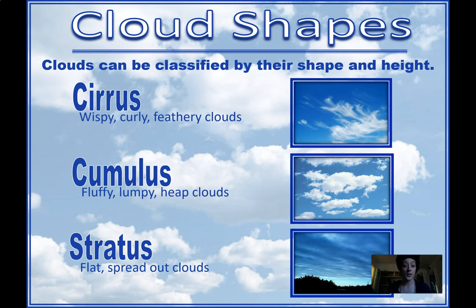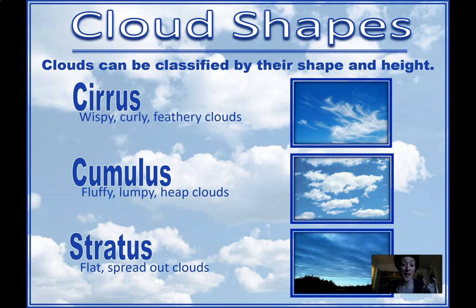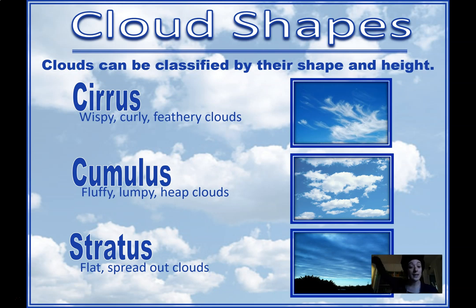Just remember that for the height of the cloud, we use a prefix — it's going to be the beginning of the word that tells you about the height: low is strato, medium is alto, and high is cirro. Then the root or main part of the word tells you about its shape. Cirrus clouds — those high clouds — are the wispy, feathery ones.